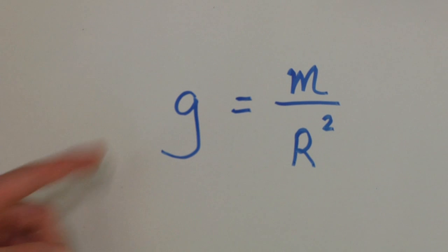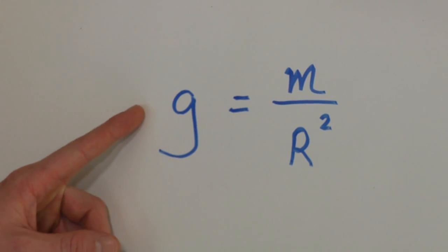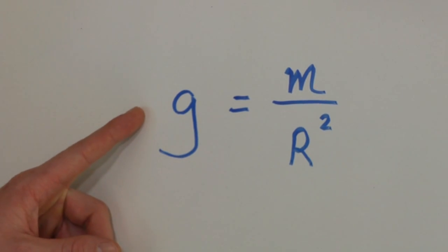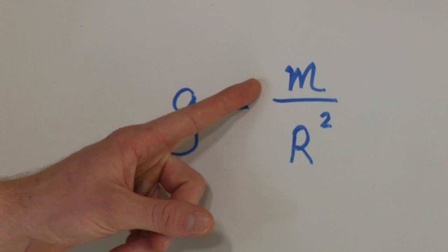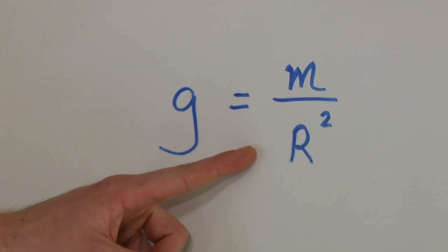We're going to use a simple equation, and instead of giving specific numbers for the mass and the radius, we're just going to compare it to Earth's mass and radius. So let's take a look. The equation we're going to use is: surface gravity equals the mass divided by the radius squared.